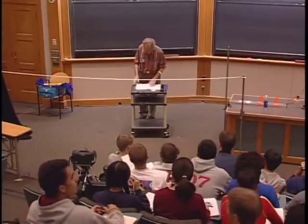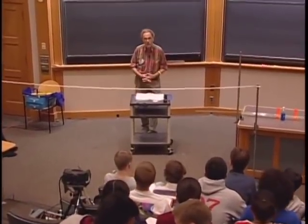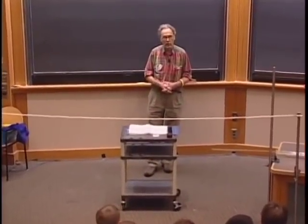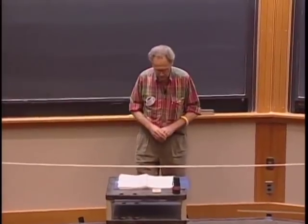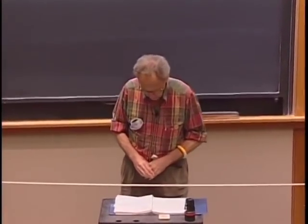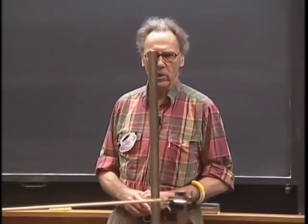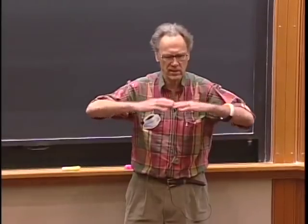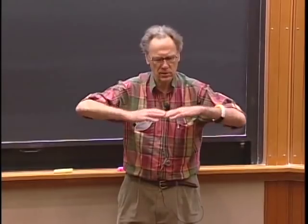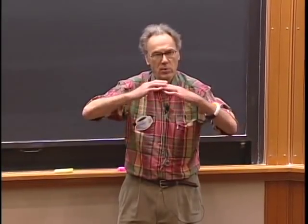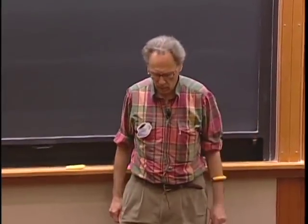We are now ready to tackle the normal modes in continuous mediums, starting first with a string which is fixed at both ends. One way to do that is to go back to the results of last lecture, when we have capital N beats, and make N go to infinity. The shapes you get for continuous media, for strings fixed at both ends, are sinusoidal motions — this would be the first harmonic, the lowest frequency, and then you get higher harmonics with higher frequencies.